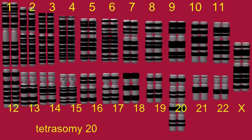If an individual possesses two extra chromosomes of one specific kind of chromosome, then they are what is known as tetrasomic.